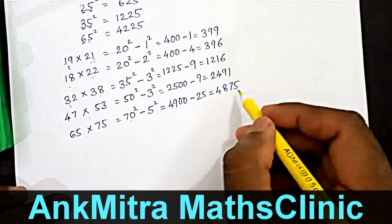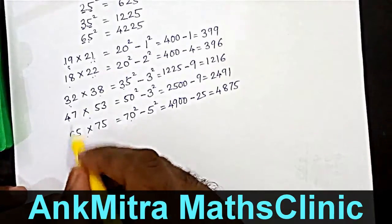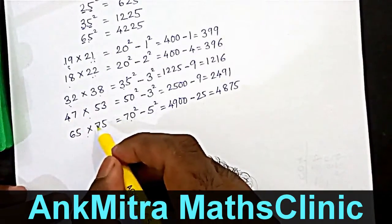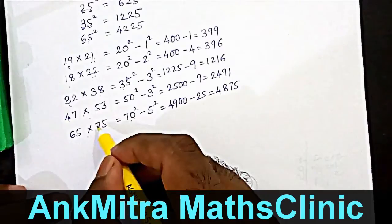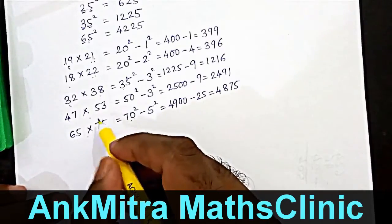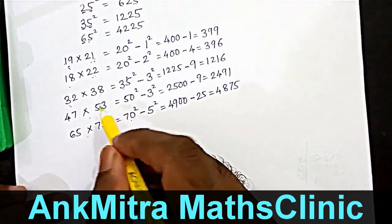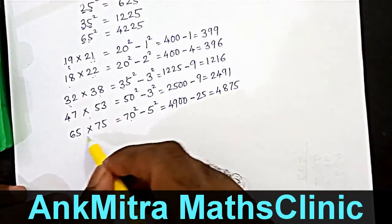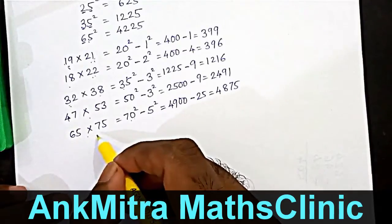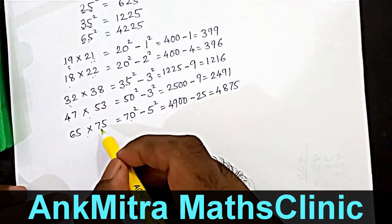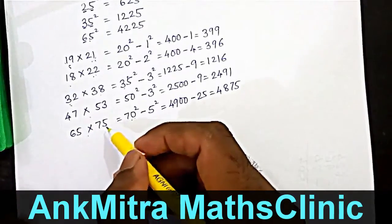Isn't this trick very easy? We can use this trick for the product of any two numbers which are close to each other, as long as the square of the middle number — the number between them — is easily calculable or already known to us.